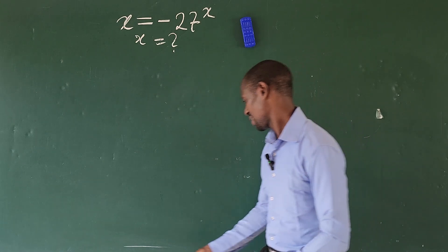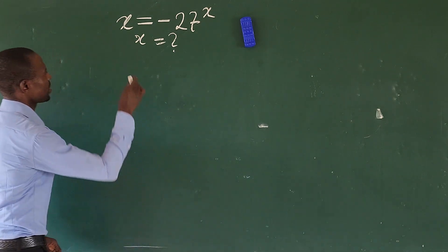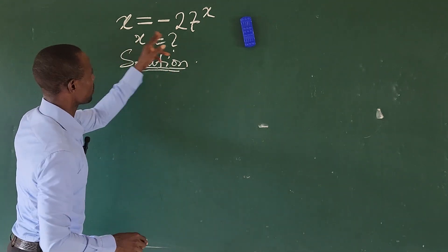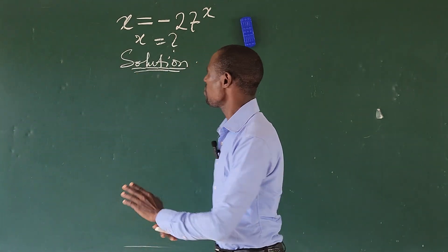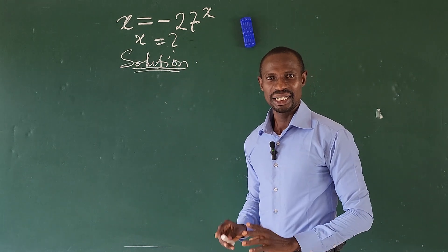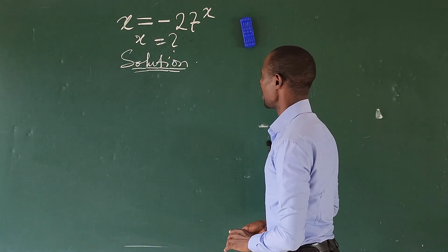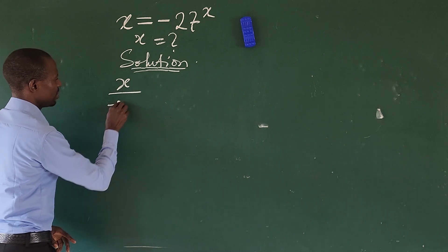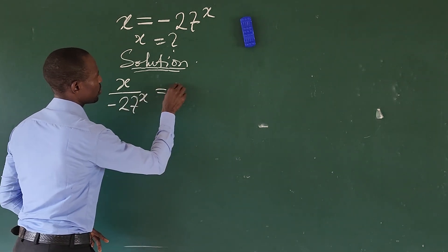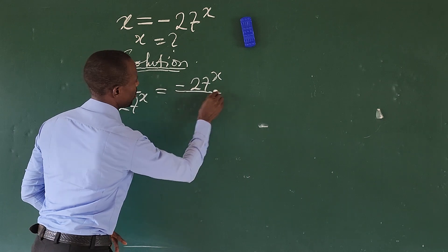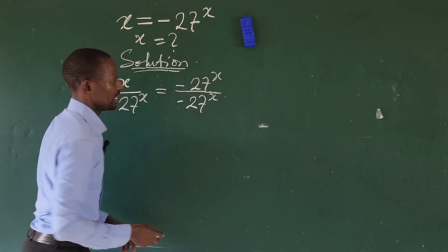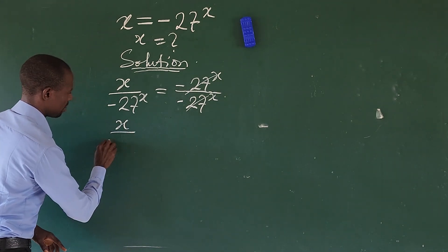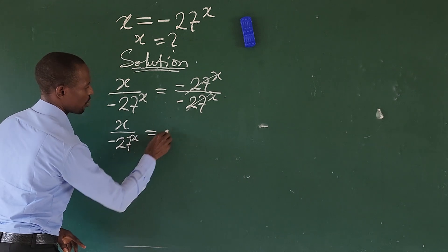Let's go into this challenge without much waste of time. The number one thing I want to do here is to make the right-hand side of this equation equal to unity. In other words, I want to divide both sides by minus 27 to the power of x, which gives us x over minus 27 to the power of x equals 1.